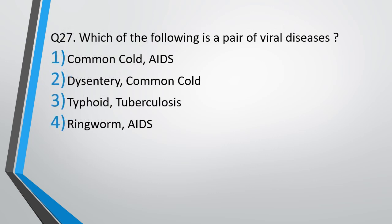Question number 27. Which of the following is a pair of viral diseases? Options include: Common cold and AIDS; Dysentery, Typhoid and Tuberculosis; or Ringworm and AIDS. Correct answer is option 1 — Common cold and AIDS.